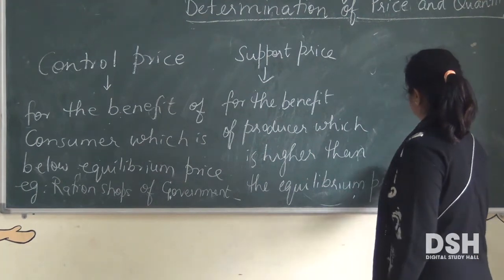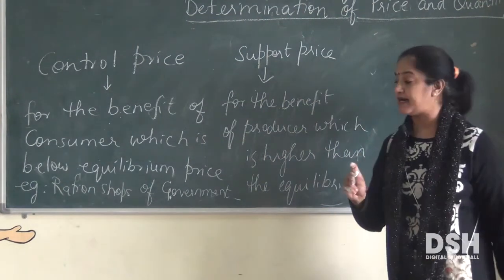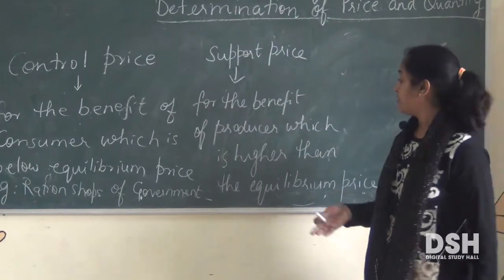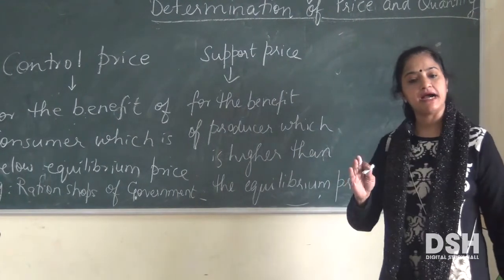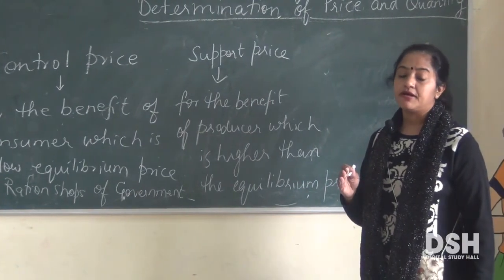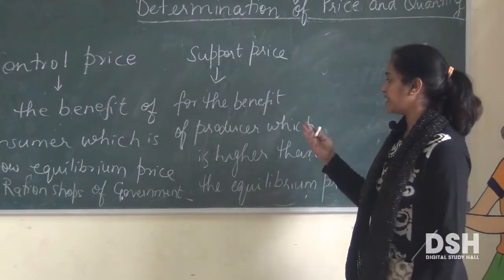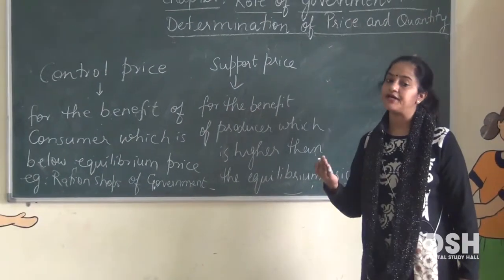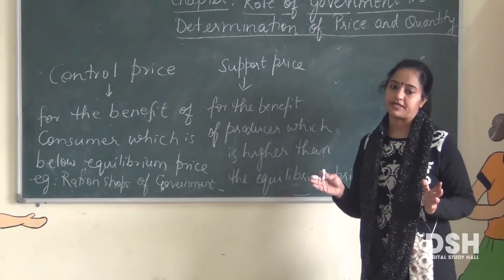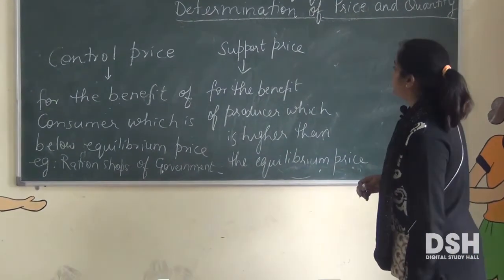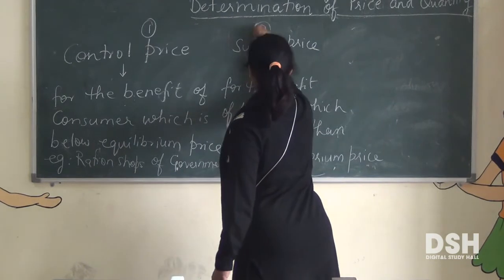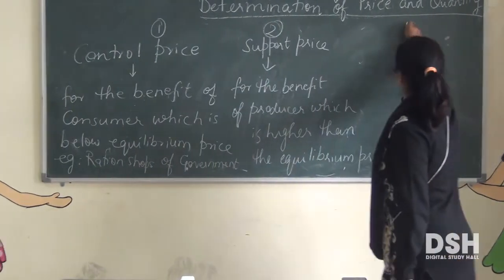Because when the consumer price is reduced, the producer gets a higher price. What happens is that the government sets a price in the market, and if the producer cannot sell at that price in the open market, the government buys it and maintains a buffer stock. So to summarize: the first type is control price, the second is support price, and the third is dual price.